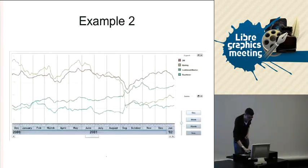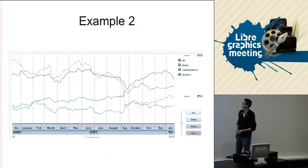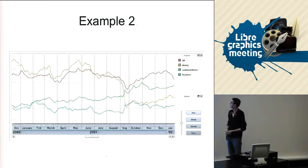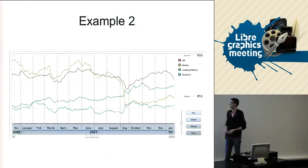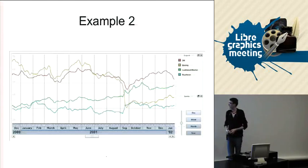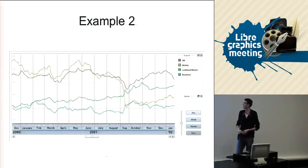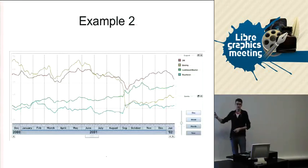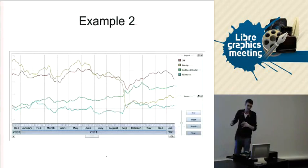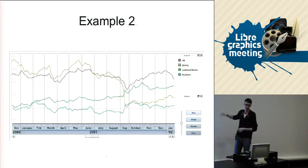Another example I can give you is for temporal data with stock quotes. There are different companies listed here, and that's the year 2001 that's visualized now. As you can see, in September there was a slight drop in 2001 — and you all know why that happened. So the widget can be used for different types of data. I've shown you music — discrete data — and this is continuous data, stock quotes basically, that varies over time.